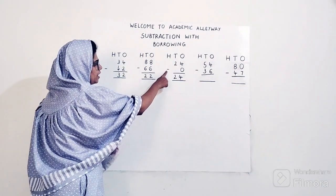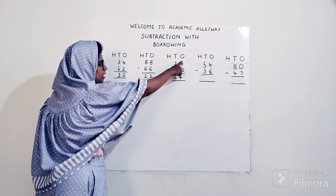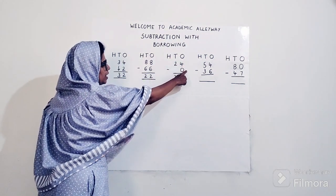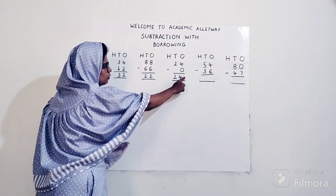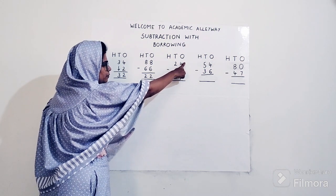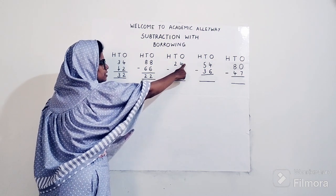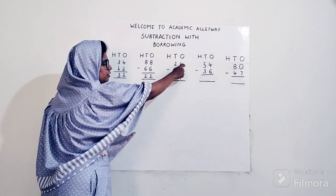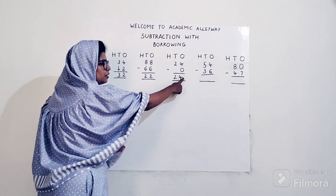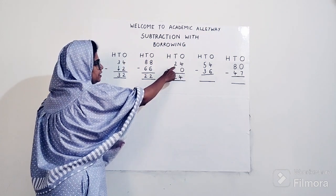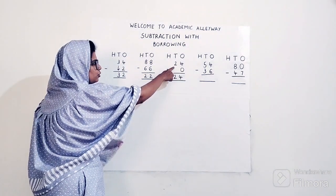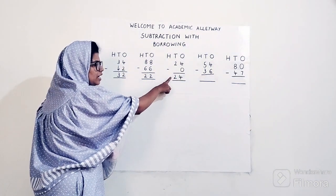Next example. Write HTO. The example is 24 minus 0. Starting with ones: 4 minus 0. Whenever you subtract 0 from any number, the answer remains the same number. So 4 comes down as it is. There is no number below 2, so 2 also comes down as it is. Answer is 24.